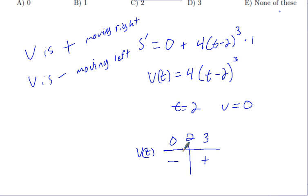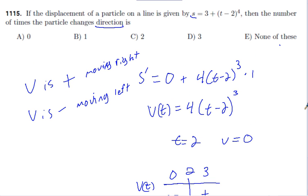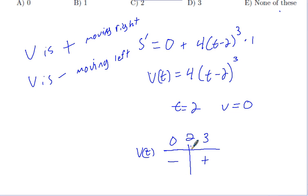There's no other critical point, so there's no way it can change direction anywhere else. Since this is a polynomial — a number to a power — it's continuous, meaning there are no breaks or jumps. The particle cannot make any magical jumps across an asymptote. So it will only change direction once, and the correct answer should be B.